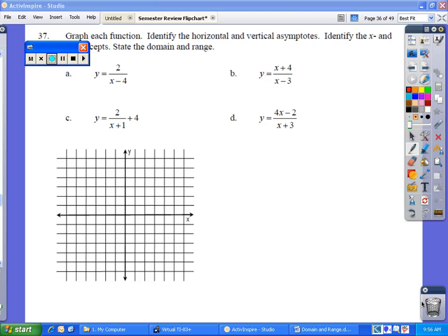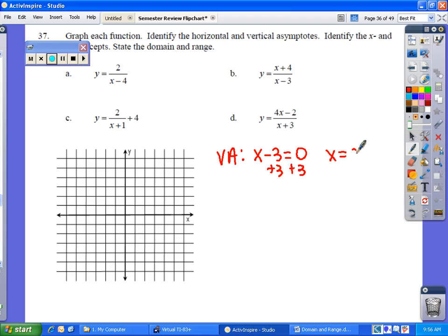For 37b you're going to do the same thing. Your horizontal and vertical asymptotes are found by setting the denominator equal to zero. Your horizontal asymptote will be, since the exponents are the same, you're just going to divide the coefficients which are both going to be one.